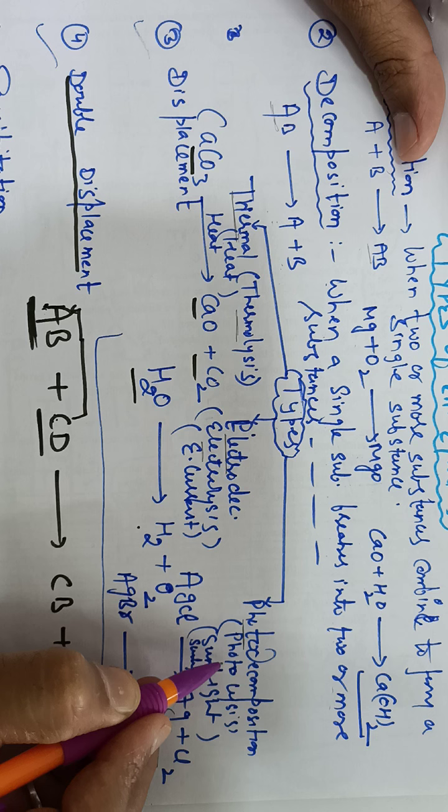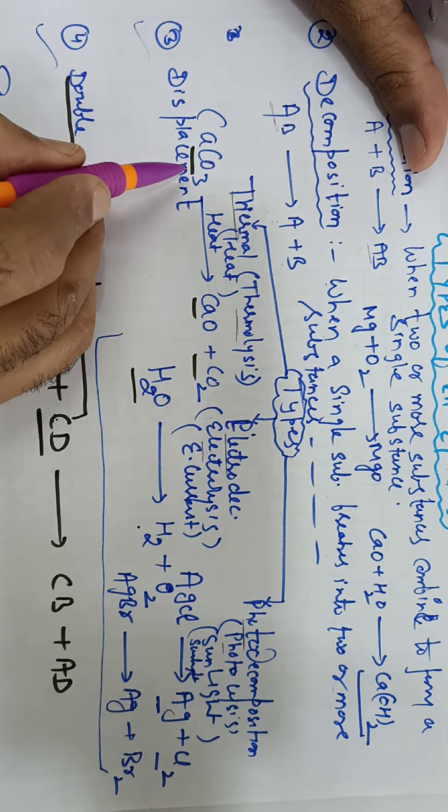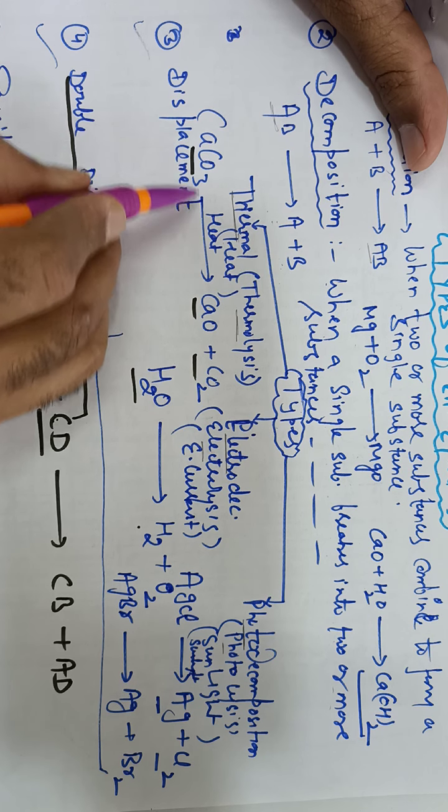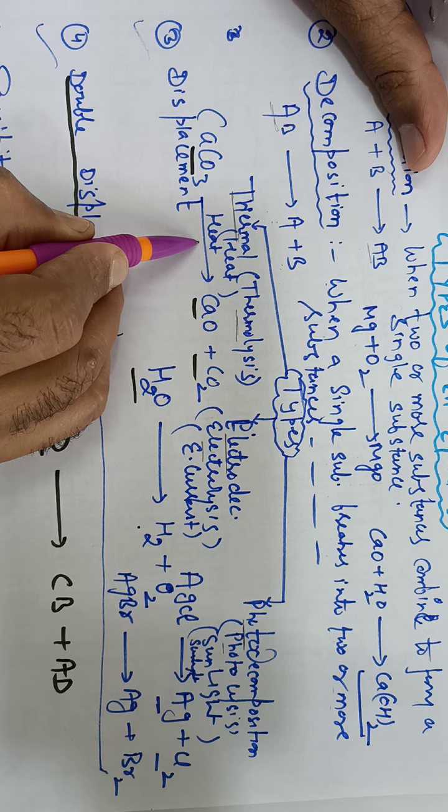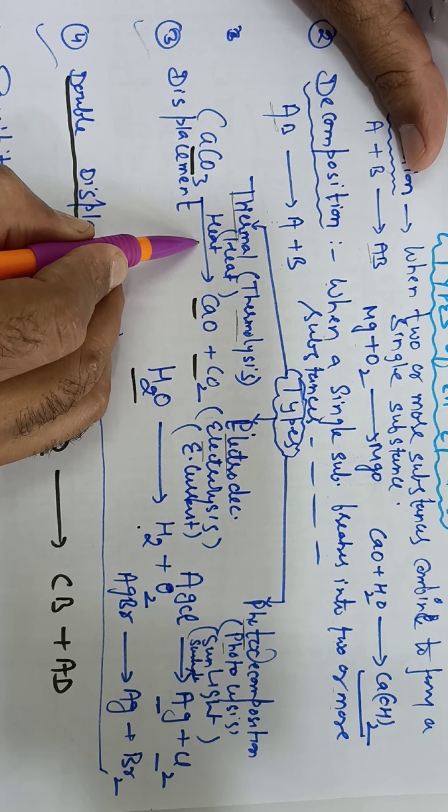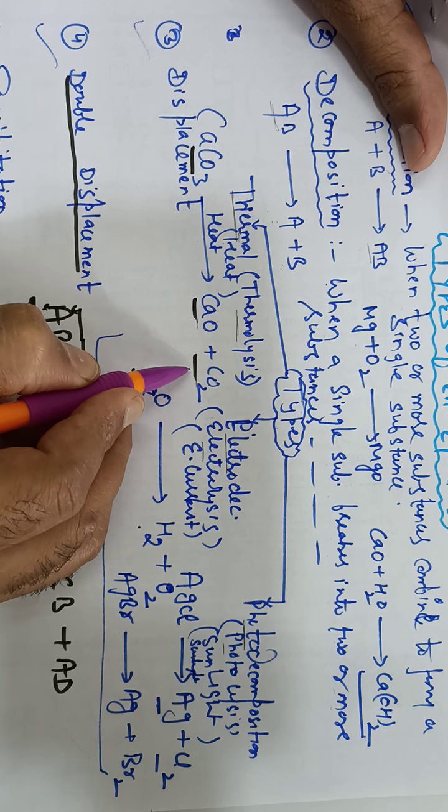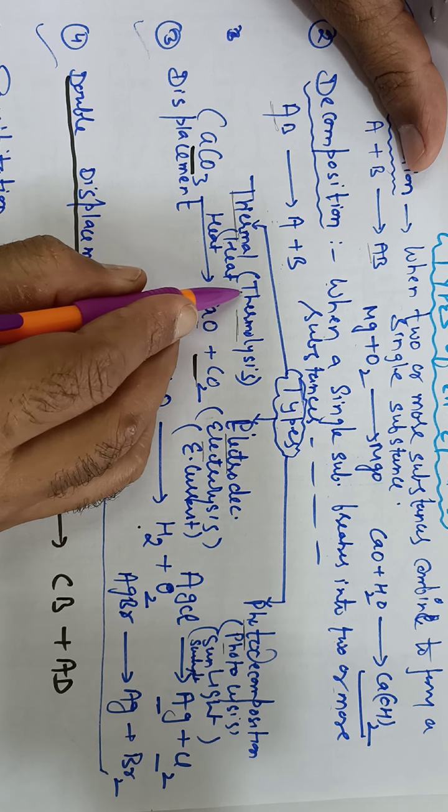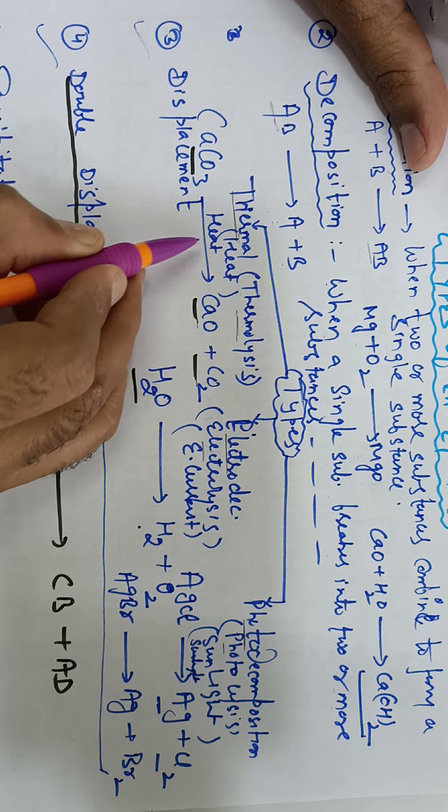Thermal decomposition, for example: calcium carbonate when heated in a beaker or test tube will form calcium oxide and carbon dioxide gas is released. This is called thermal decomposition because it takes place in the presence of heat.